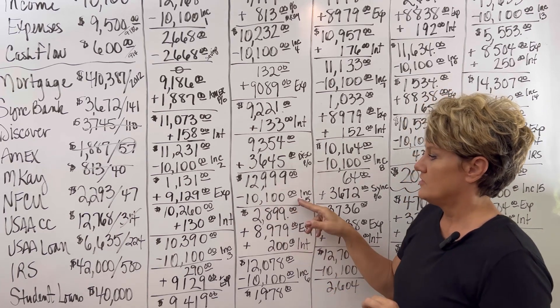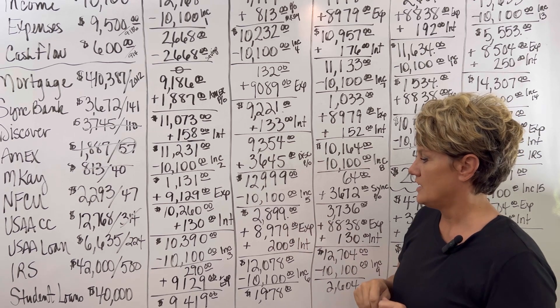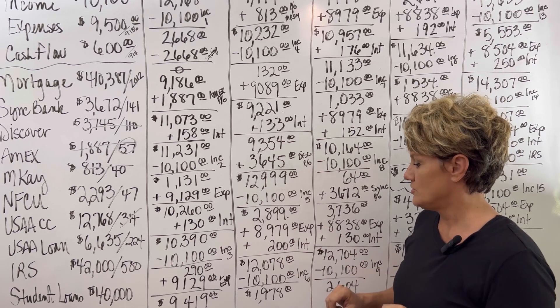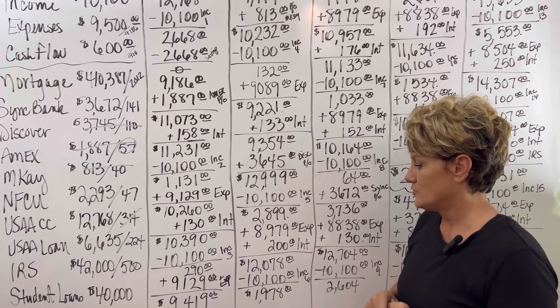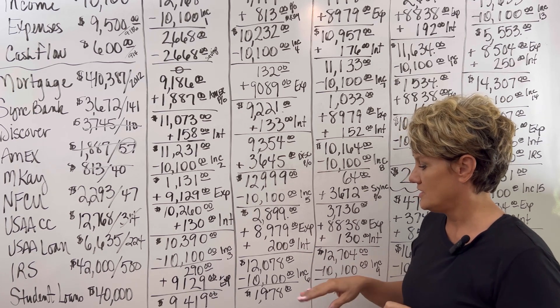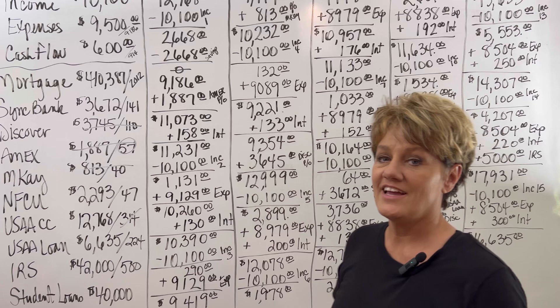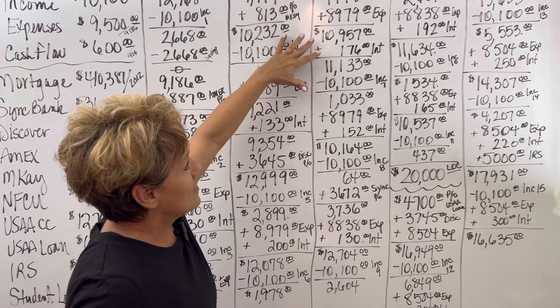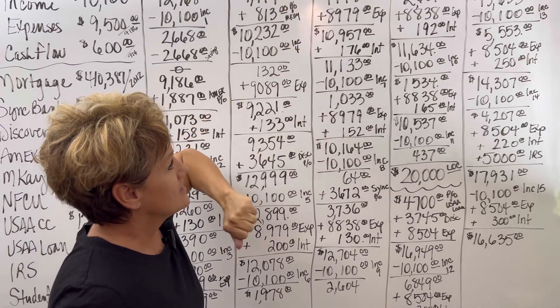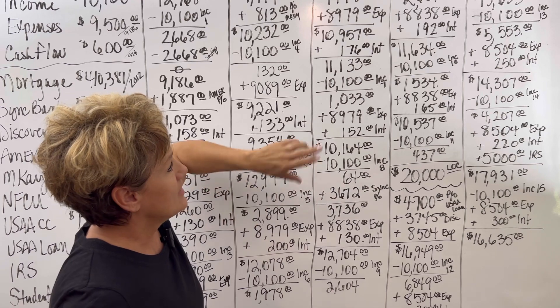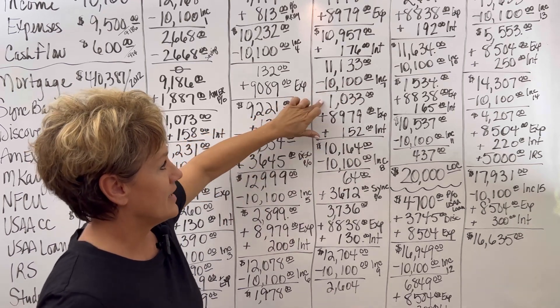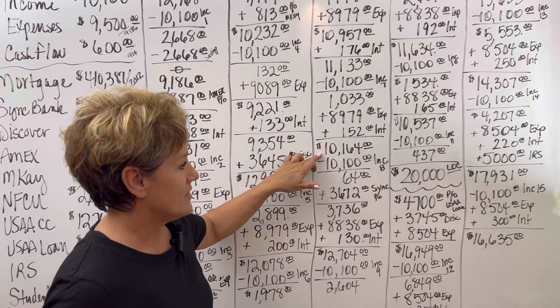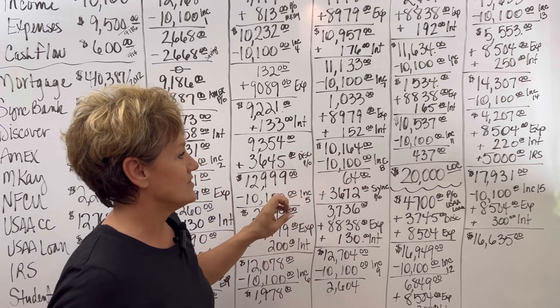Income goes in at month five, bringing the balance down to $2,999. The expenses are now at $8,979, the interest at $200, and then the balance is at $12,078. Income month six goes in, bringing that down to $1,978. So the expenses will come back out. The interest will come out, bringing the balance to $11,133. Income month seven goes in, bringing the balance back down to $1,033. The expenses and interest will come back out through the month, bringing the balance back to $10,164.